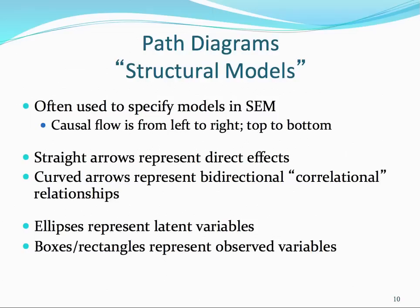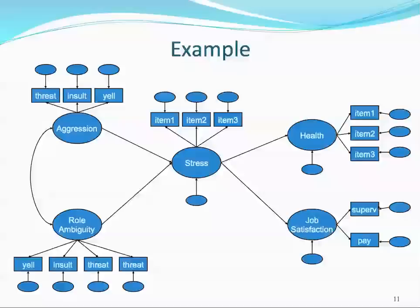Our structural models are sometimes called path diagrams. These are used to specify the models in structural equation modeling. The causal flow in structural equation models is read from left to right — those variables on the left cause those on the right — and from top to bottom. In our structural models, straight arrows represent direct effects, so an independent variable predicting a dependent variable. Curved arrows represent bidirectional or correlational relationships between two variables. We use ellipses to represent latent variables and boxes or rectangles to represent observed variables or indicators.